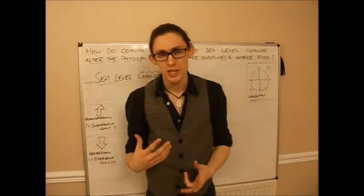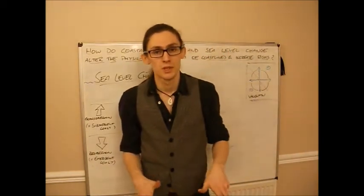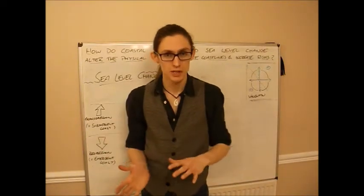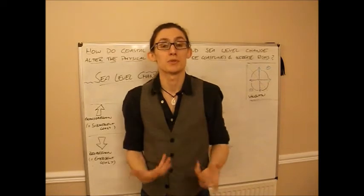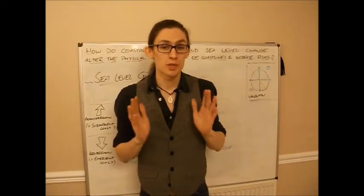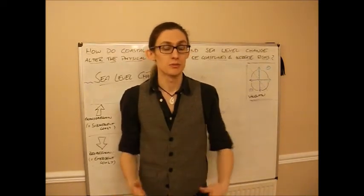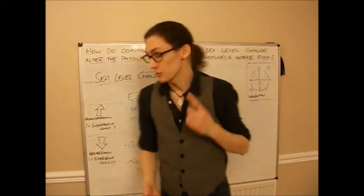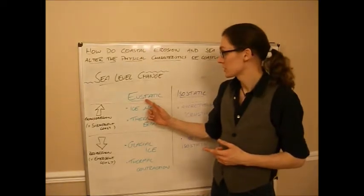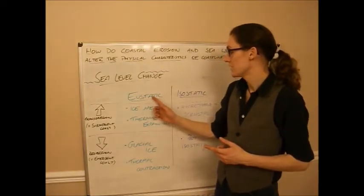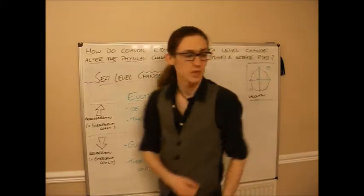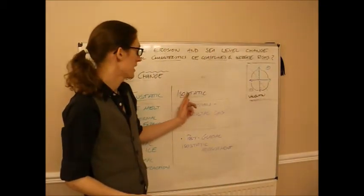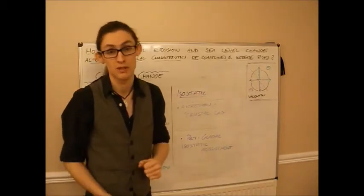Sea level change is not a simple thing. It can occur in many different ways, in many different locations and many different times. So we're going to break it down into different types of sea level change: eustatic (E-U-S-T-A-T-I-C) and isostatic (I-S-O-S-T-A-T-I-C) sea level change.